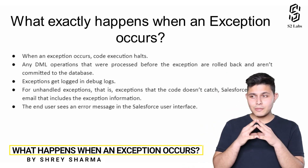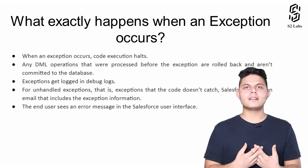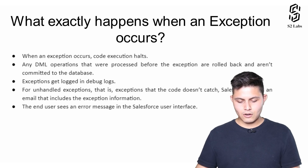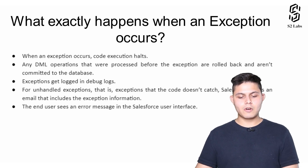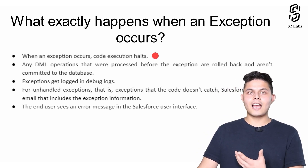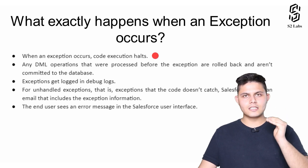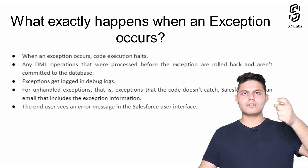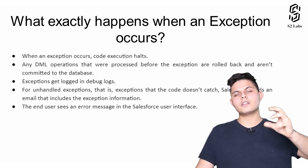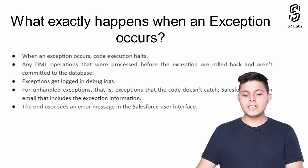Now it is time to talk about some important points that you need to consider while working with or handling exceptions. Let's have a look at all of these things one by one. Point number one: when an exception occurs, the program execution halts. Whenever an exception occurs, the execution of the rest of the code in that particular try block gets halted.